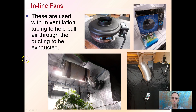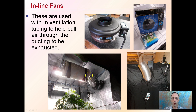In-line fans, like the one I have here in the grow tent, are used within ventilation tubing to help pull air through the ducting to be exhausted. The setup includes a carbon filter, ducting, and the in-line fan. Ideally, hot air is cleaned through the carbon filter — removing odors — and then exhausted out.